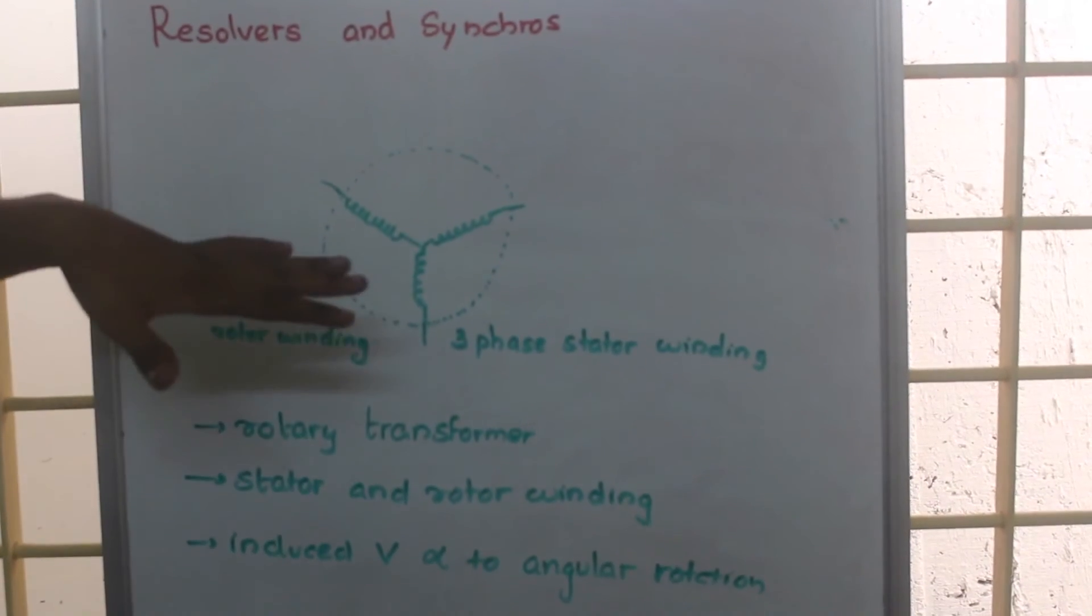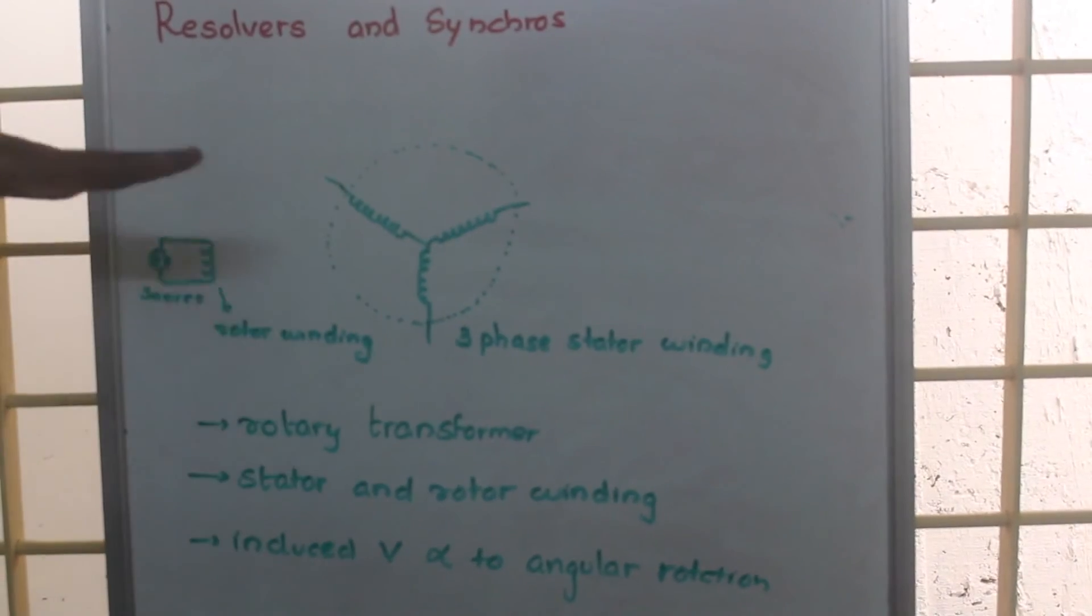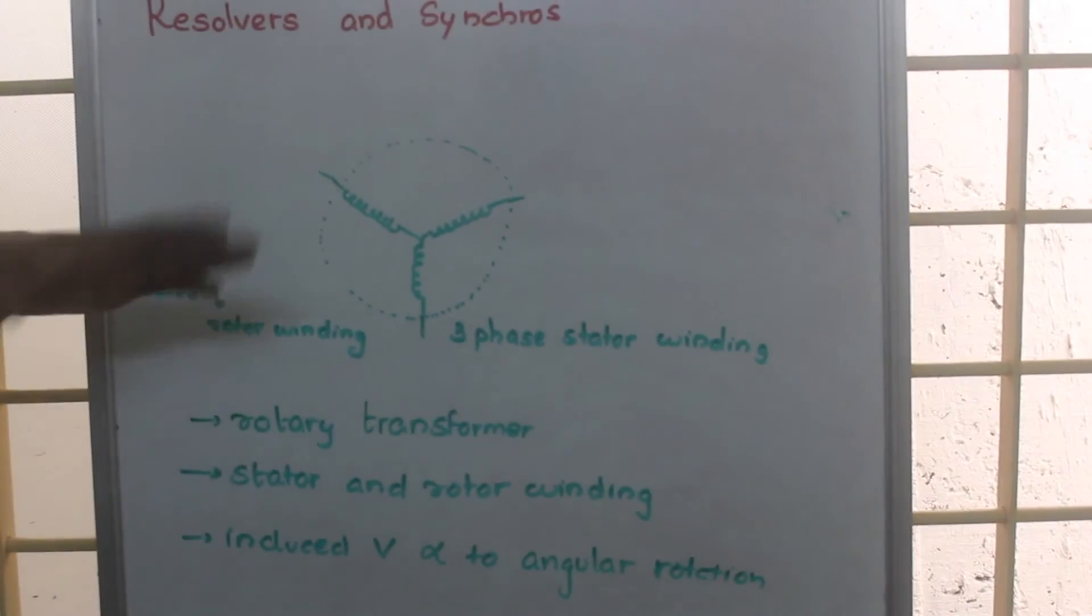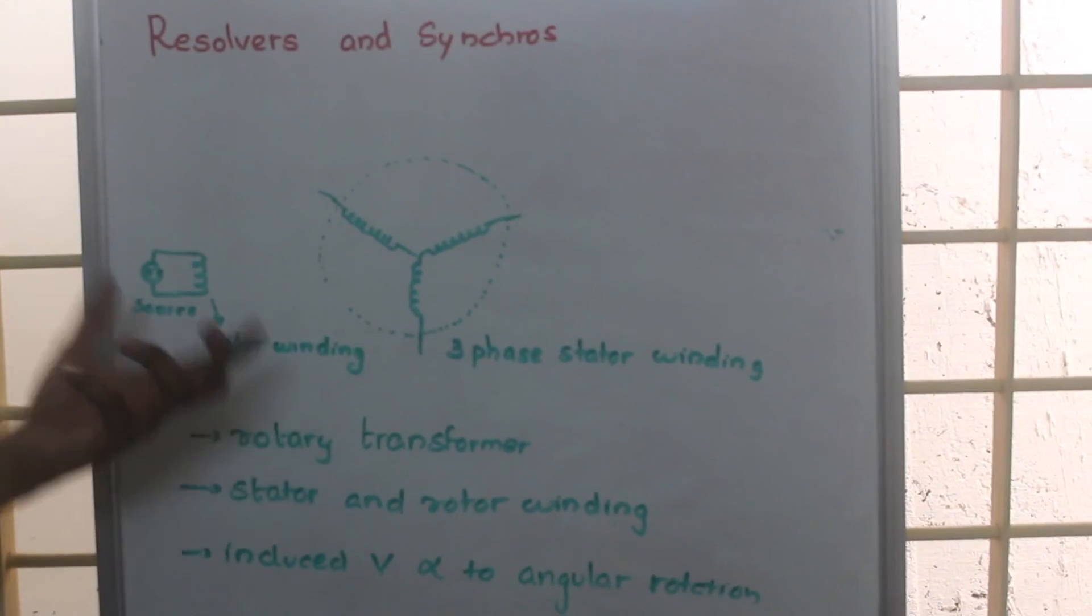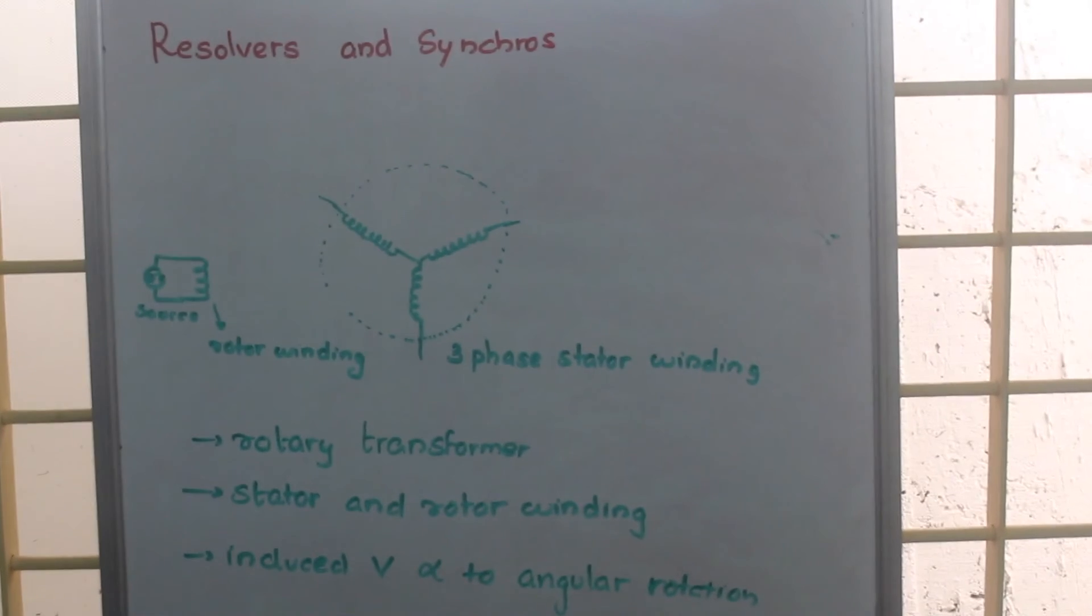So in resolvers and synchros we use the transformer action between the rotor winding and stator winding to get the amount of rotation. Thank you.